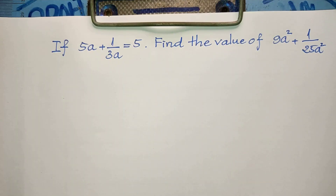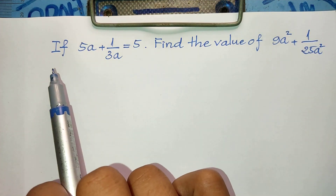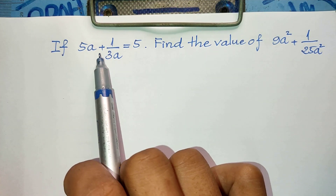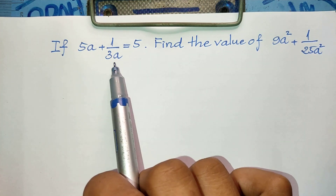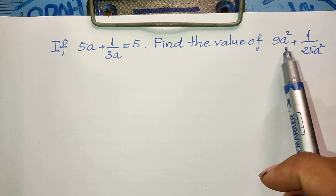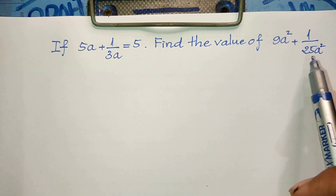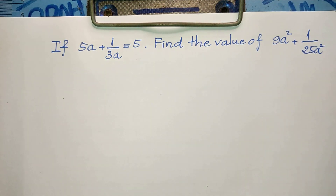Hello everyone, welcome to my YouTube channel. Today I have one exercise: if (5a + 1) divided by 3a equals 5, find the value of (9a² + 1) divided by 25a². Do you know how to solve this? If you know, please try it, then come back to watch my video from beginning to the end to verify your solution.